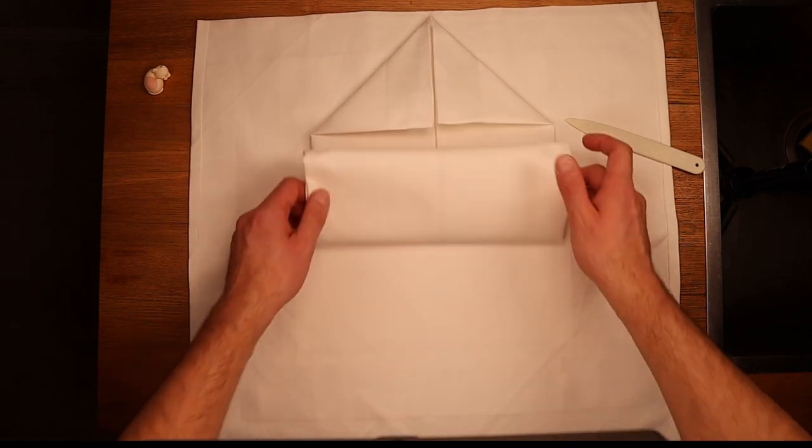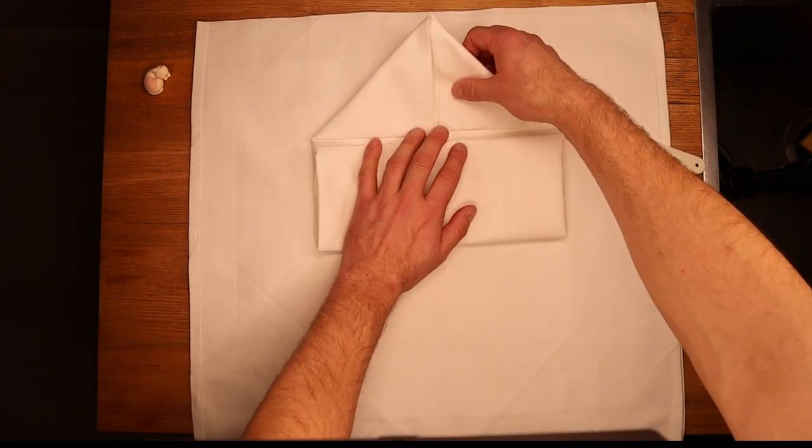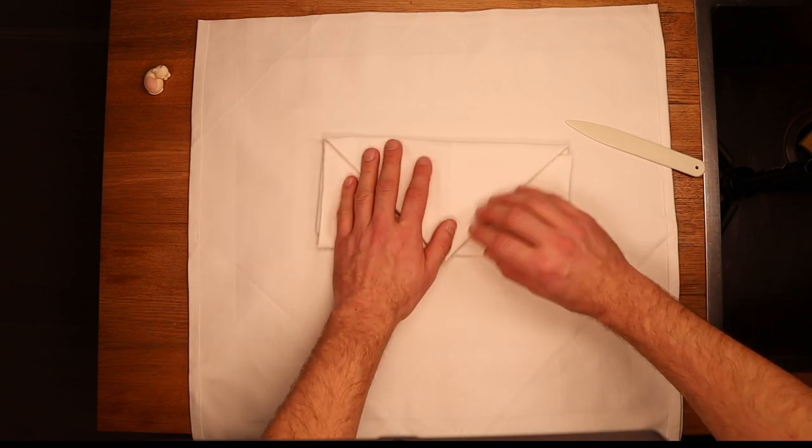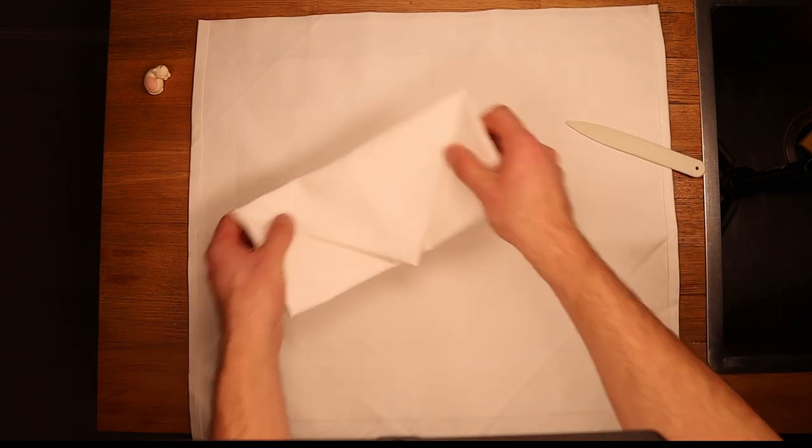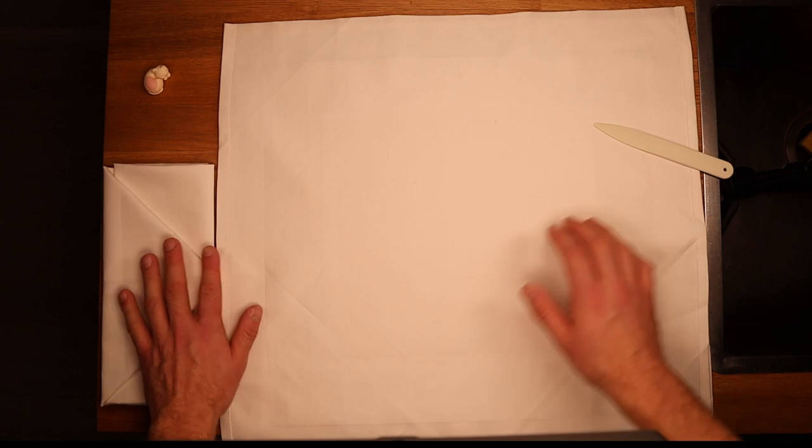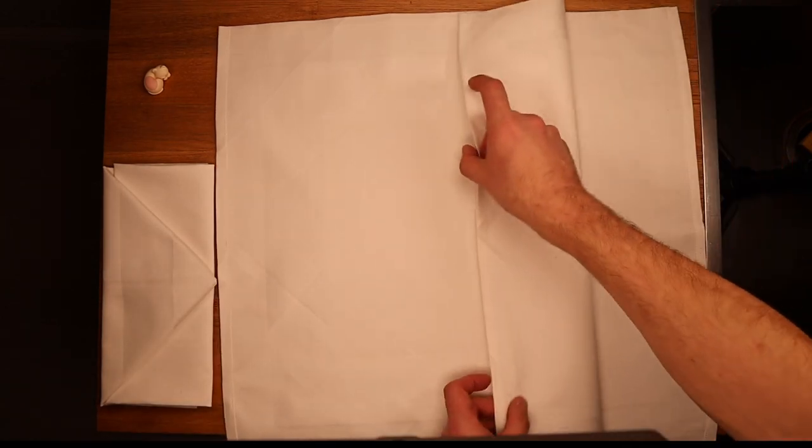Now you fold the lower edge about 10 cm or 4 inches for the ones in the US and do it again. This forms the body. This is the bottom flap of the envelope.